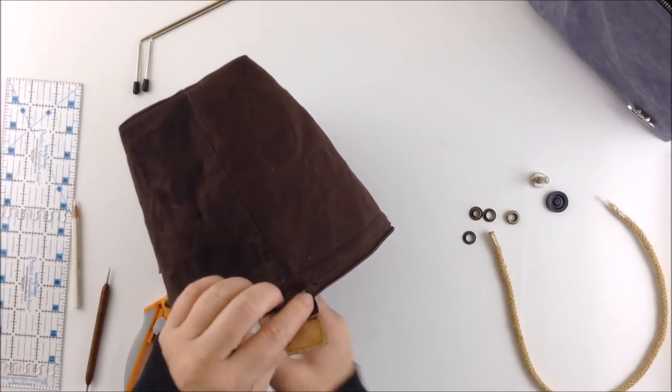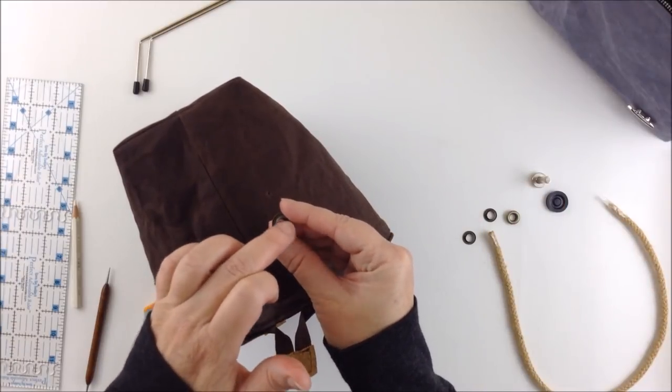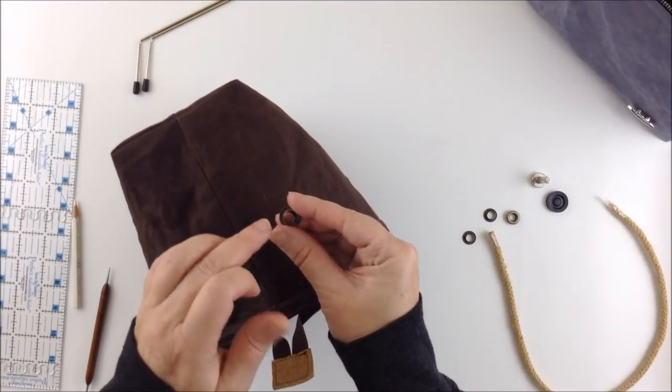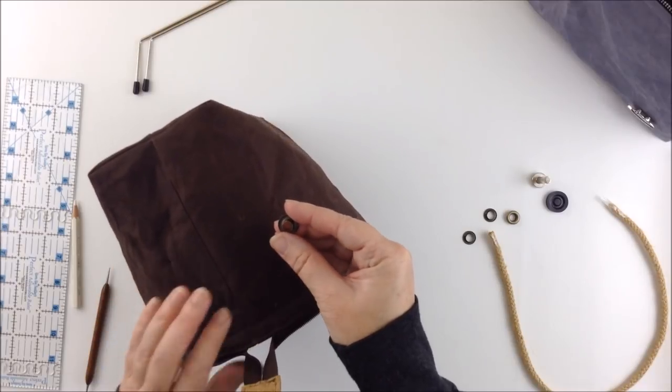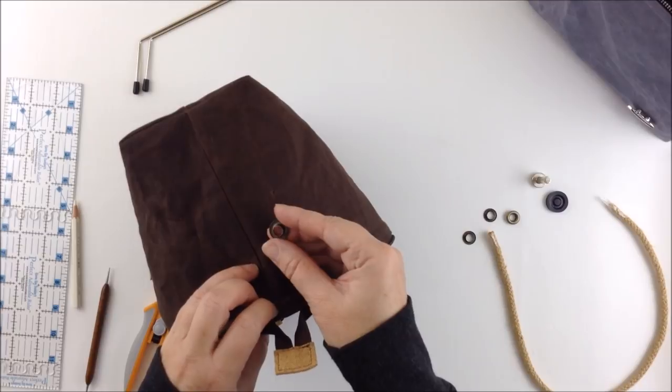Then you cut a small hole much smaller than quarter inch because you don't want to cut out a quarter inch because then the fabric will stretch. So you just want to cut out a very small hole so that the fabric can stretch over the grommet.